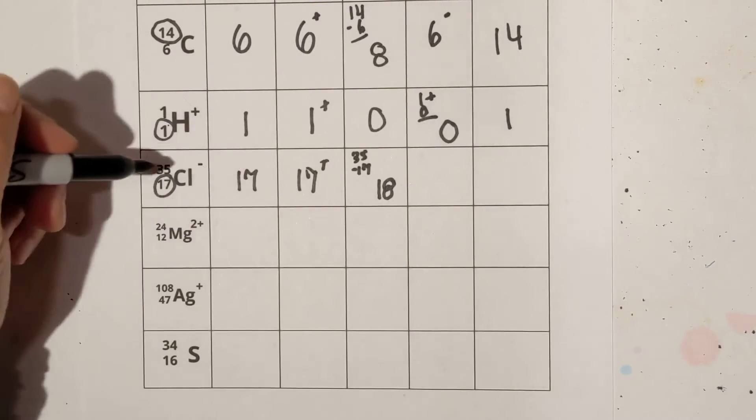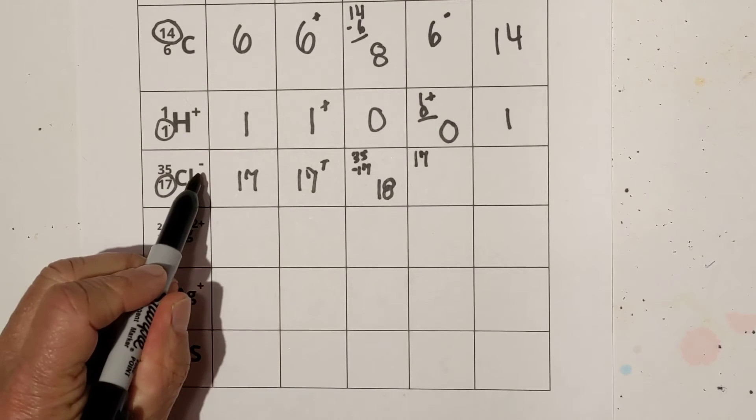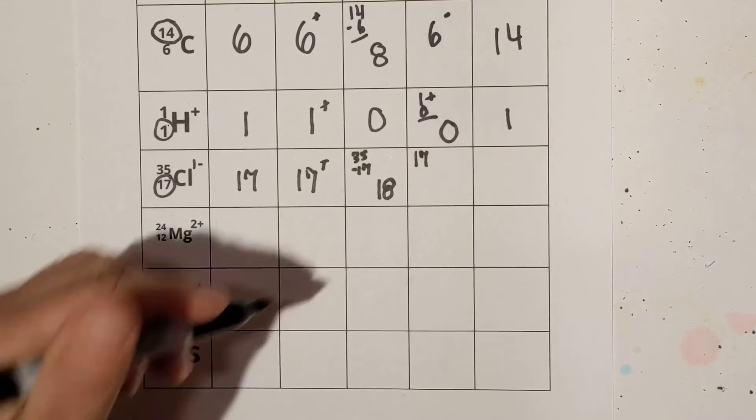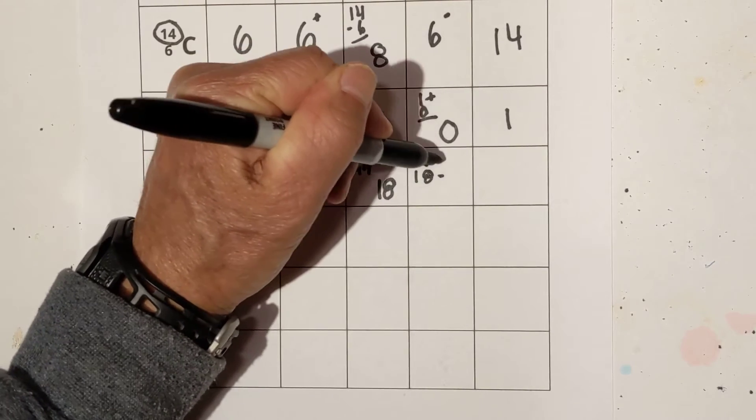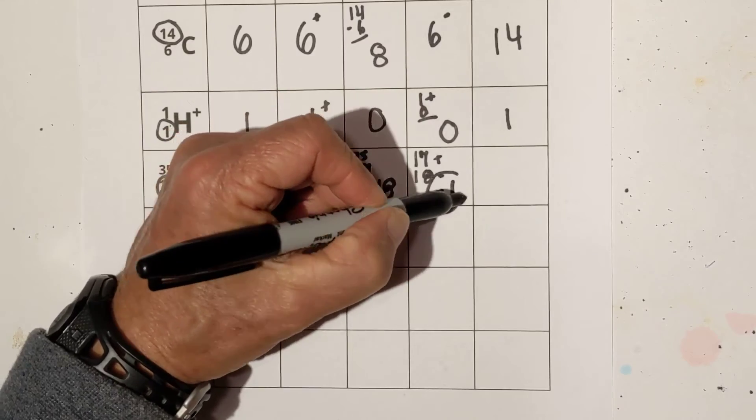Number of electrons. Well, we know that we have 17 positives, and it has a negative one charge. You can assume there's a one right there, so that means we must have 18 negatives so that we end up with a minus one charge.